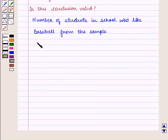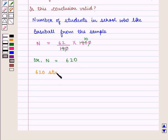Now the number of students denoted by N is equal to the number of students who like to play baseball, that is 62, upon the number of students surveyed which is given by 180, multiplied by the total number of students in the school, that is 1800. And therefore the number of students, that is N, is equal to 620. So we can conclude that 620 students in the school like baseball.